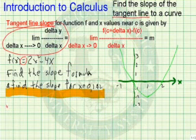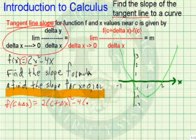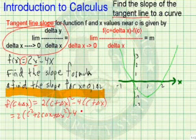So let's first find f of c plus delta x. We're going to replace all the x's with c plus delta x. So we'll need to expand this, which will give us 2 times the expression c squared plus 2c delta x minus 4c minus 4 delta x.